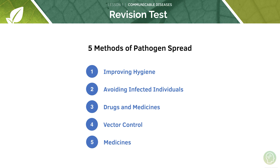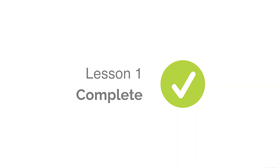I'd suggest going back through and making revision products — maybe mind maps if that works for you. For example, for pathogen spread you'd have 'pathogen spread' in the middle with five areas coming off it. That could be a good way of making a list more interesting to learn. That's all for today and I'll see you for the next tutorial.